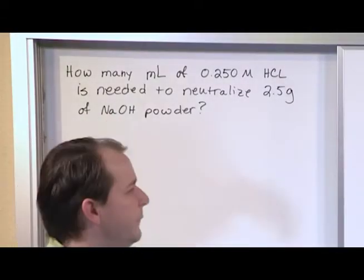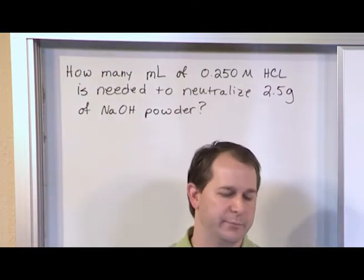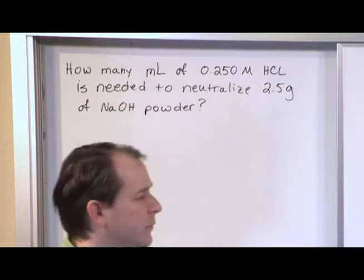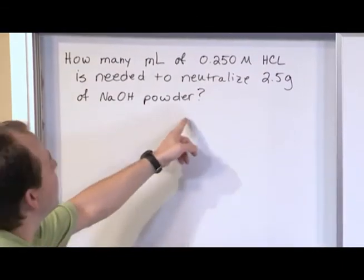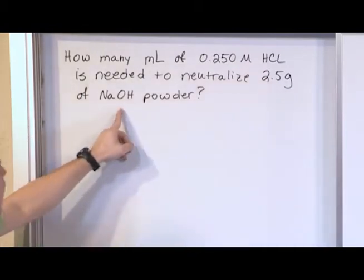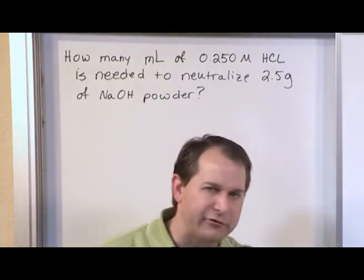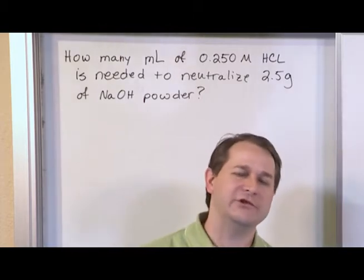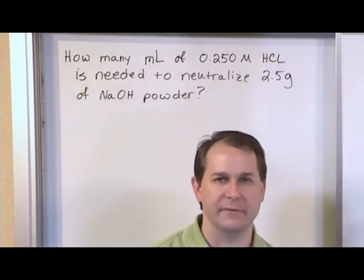So this sodium hydroxide powder is something you could get from a lab catalog. You pour a pile of it into a beaker or something. How much do you pour in there? You pour 2.5 grams of this powder. So you measure that out, you put it in there, and the question is how much acid do I need to pour on top of it?